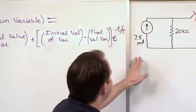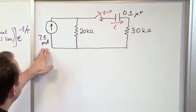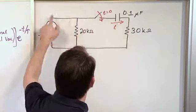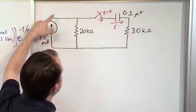So here's the circuit. We have a 7.5 milliamp current source coming in here, and the switch is initially open, so when it's open the current is just circulating here forever and ever.